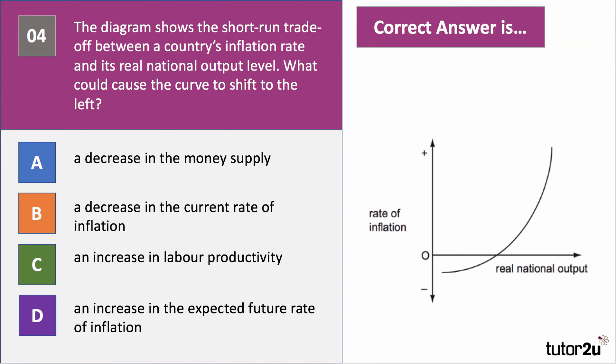Question four. The diagram shows a possible short-run trade-off between two macro objectives — inflation and real national output. What could cause the curve to shift to the left? Have a go at question four.